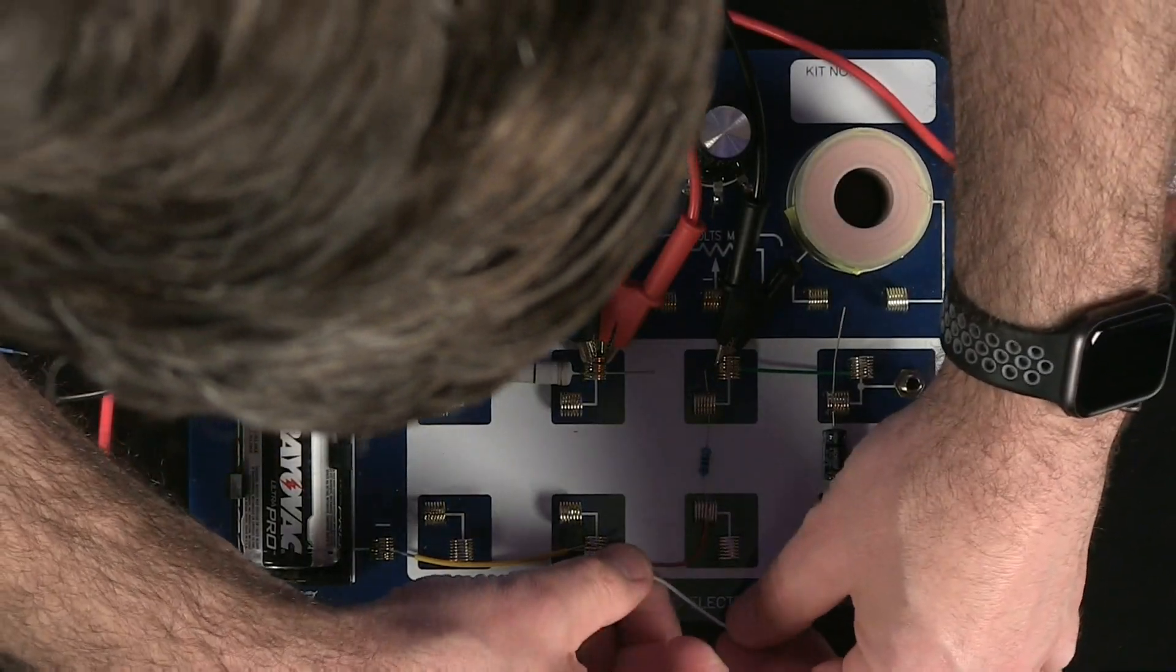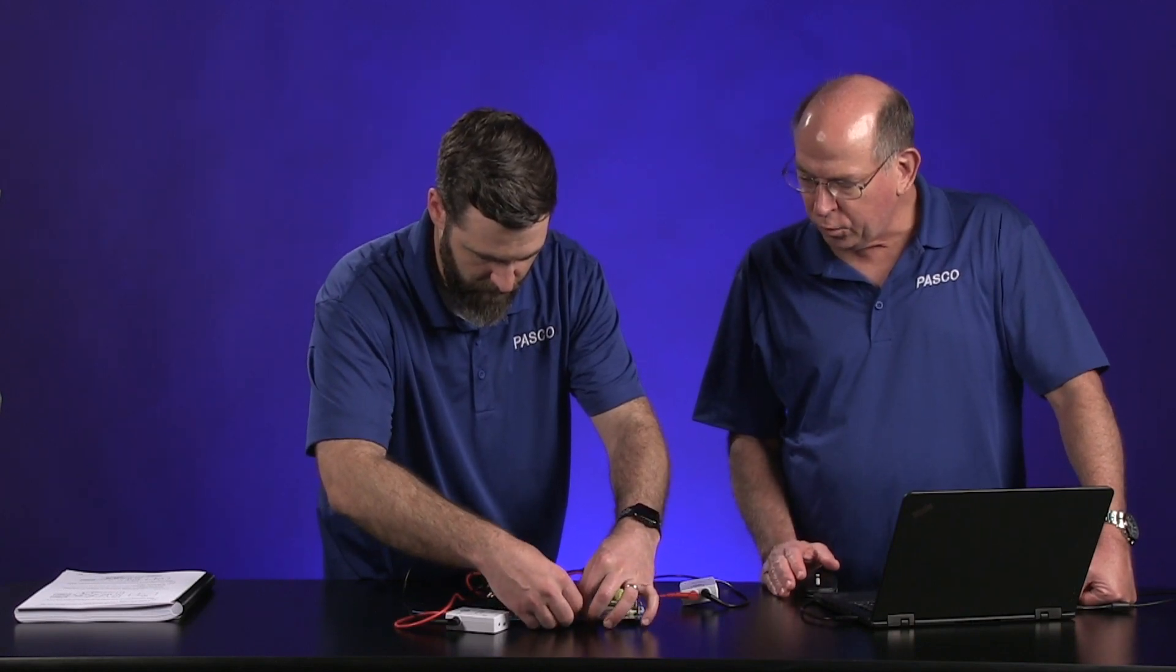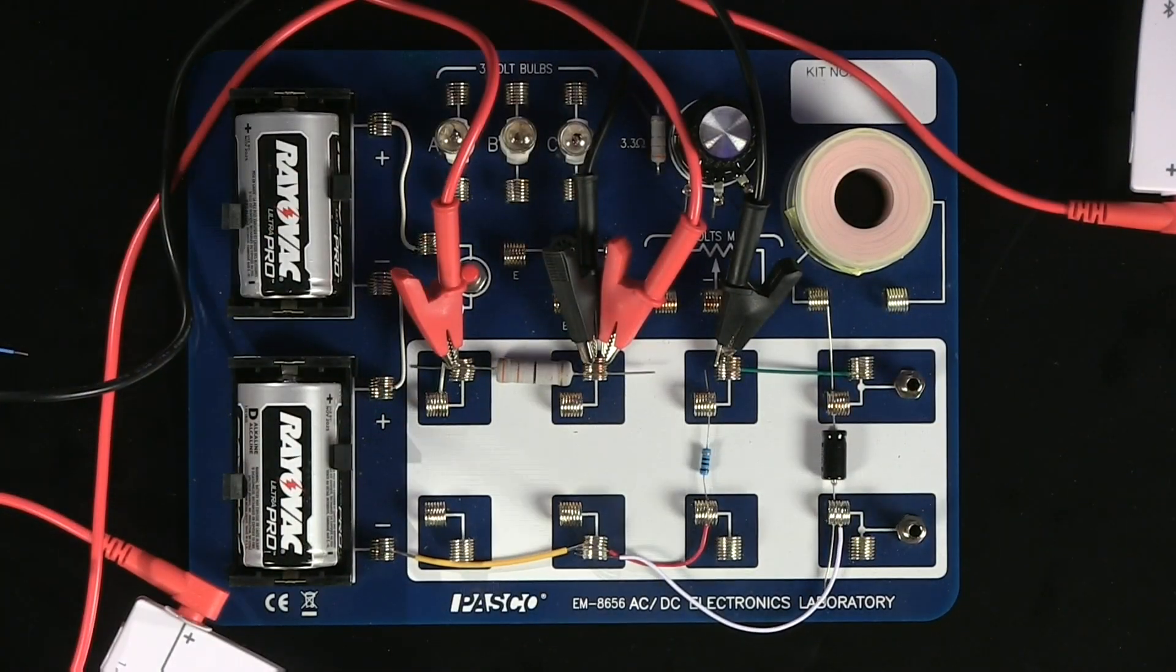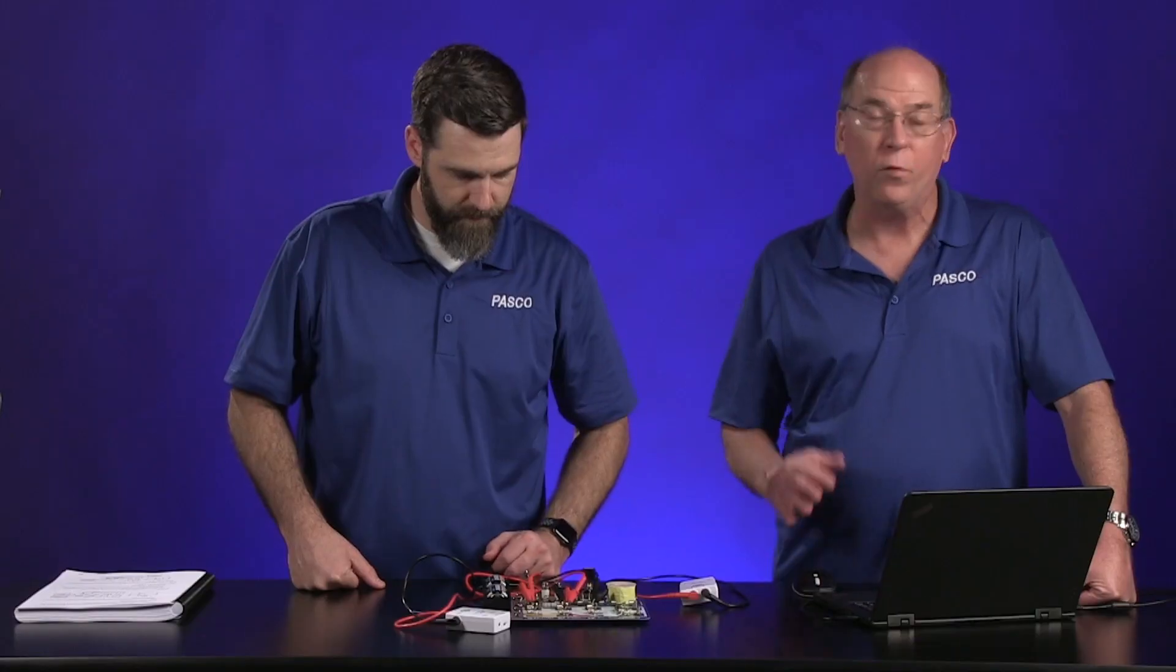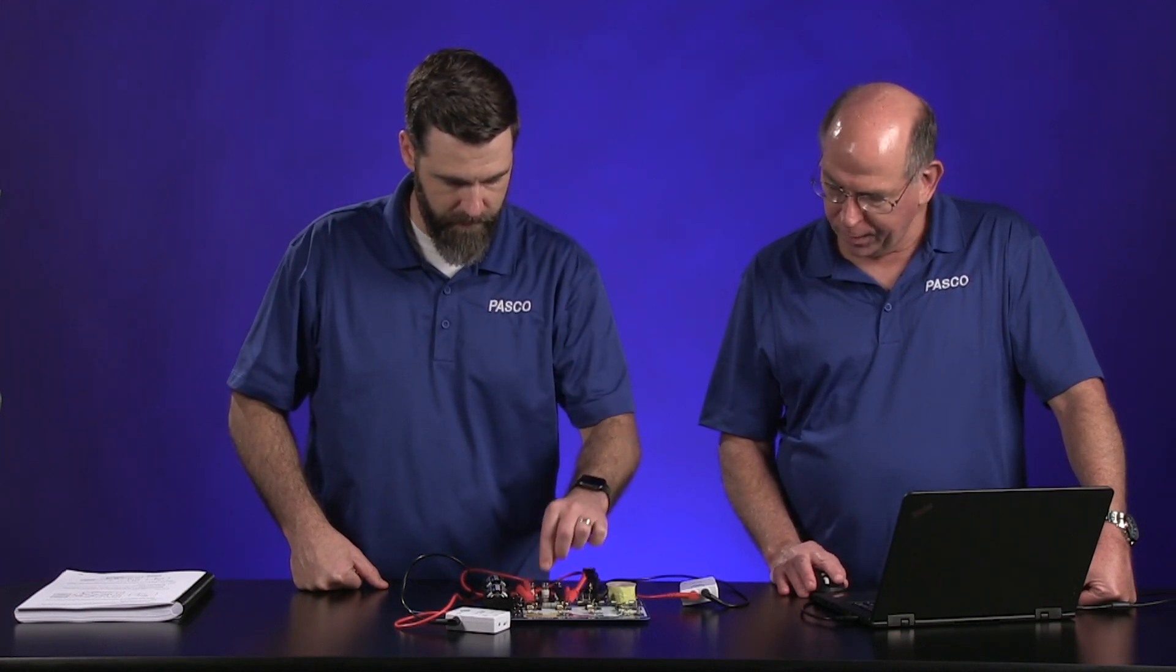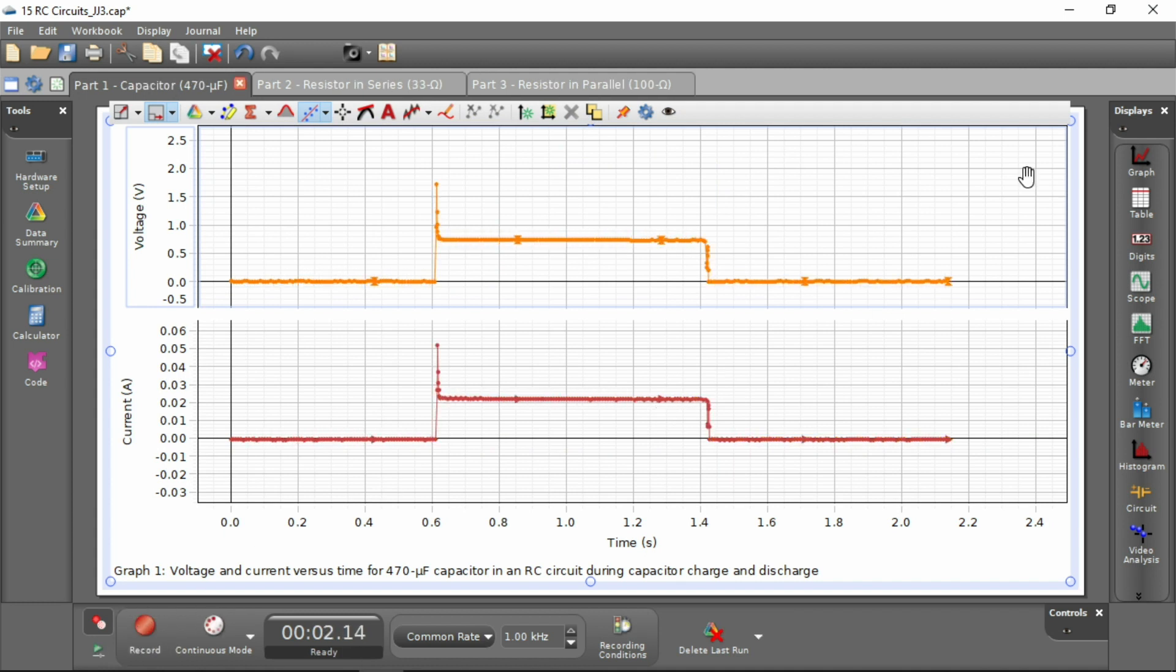And then we need to put that jumper wire. Yeah, we got to put this wire back. So run number two will be the voltage across the 33 ohm resistor and then the charge flowing through it or the current of the 33 ohm resistor, which is in series. So this is part two in the lab write-up. So whenever you're ready. All right. Go ahead.